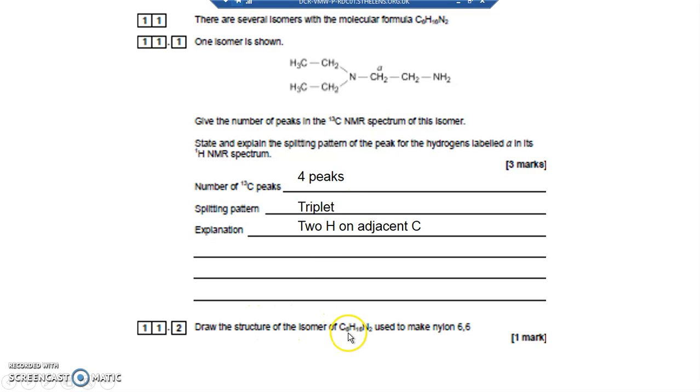The structure of an isomer of C6H10N2 used to make nylon 6-6. Well what's nylon 6-6? It's got an amide link in there, it's a polyamide. Chemists call it an amide, so it's a polyamide.